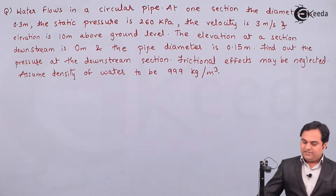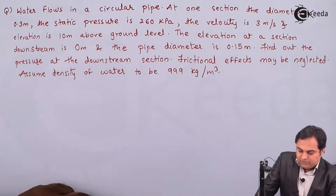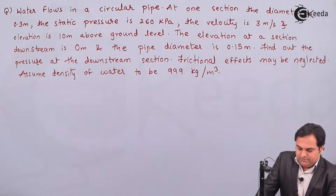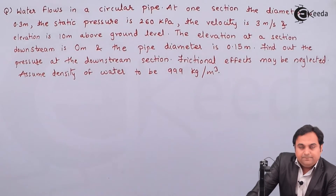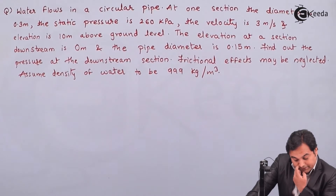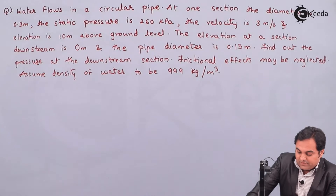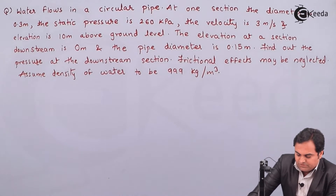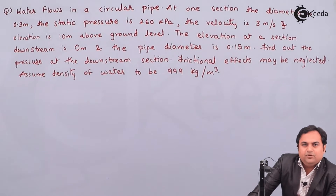Hello friends, in this video we'll see a problem on Bernoulli's equation. Water flows in a circular pipe; at one section the diameter is 0.3 meter, the static pressure is 260 kilo Pascal, the velocity is 3 meter per second, and the elevation is 10 meter above ground level. The elevation at a downstream section is 0 meter and the pipe diameter is 0.15 meter. Find the pressure at the downstream section. Frictional effects may be neglected; assume the density of water to be 999 kg per meter cube.